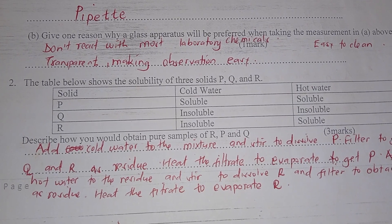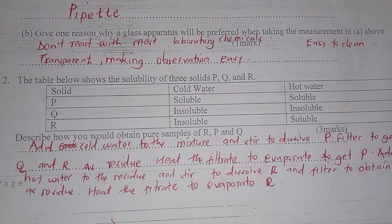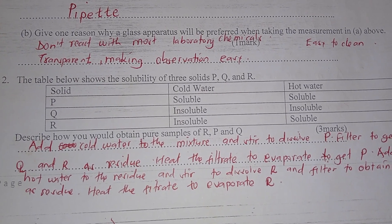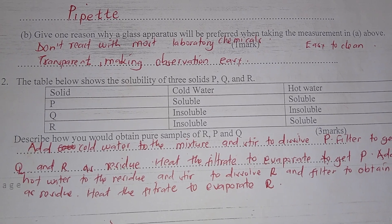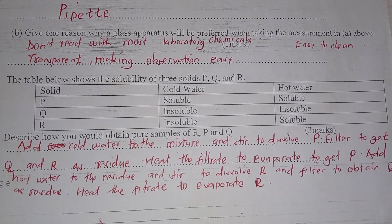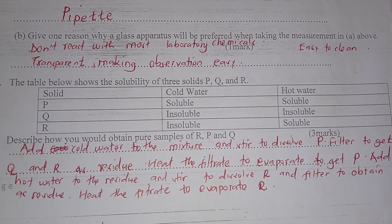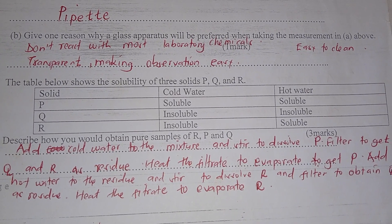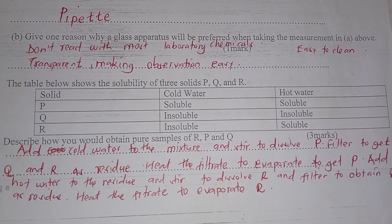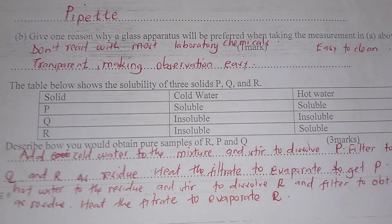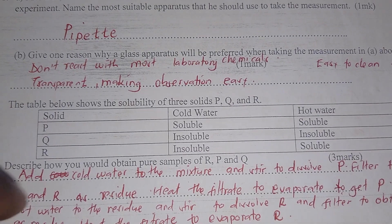Add cold water to the mixture and dissolve P, because P is soluble in cold water. Then filter to get Q and R as residue, then heat the filtrate to evaporation to get P. Add hot water to the residue to dissolve R. Then filter to obtain Q as a residue. Heat the filtrate to evaporate and you get R.